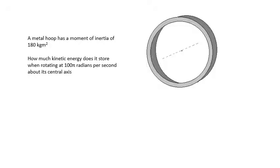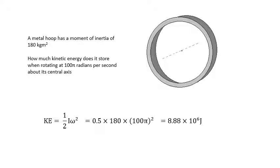Here's a little sum for you to do. This metal hoop has a moment of inertia of 180 kilogram metre squared. If you imagine this large metal ring with a radius of about a metre — something you might have found on a very large steam engine — it has a mass of about 200 kilograms, so it's a big heavy hoop flywheel. How much kinetic energy does it store when rotating at 100 pi radians per second about its central axis? The answer is about 8.88 megajoules — a lot of kinetic energy.